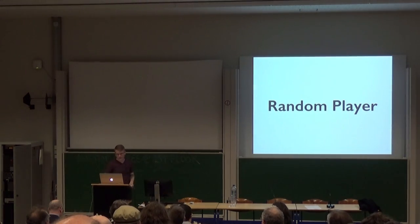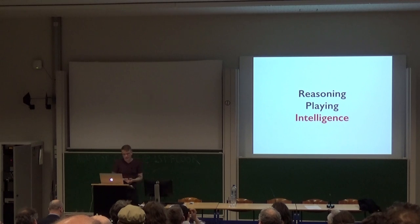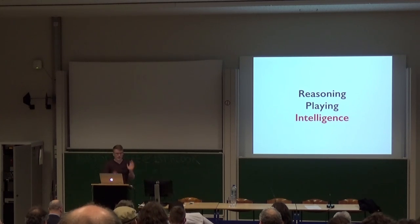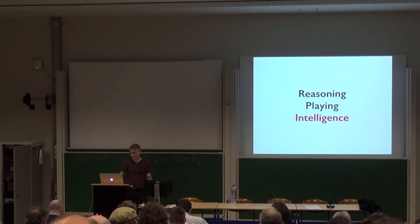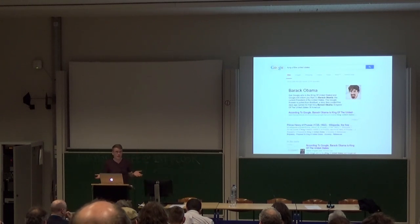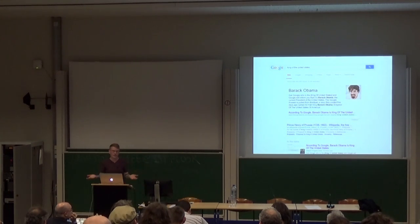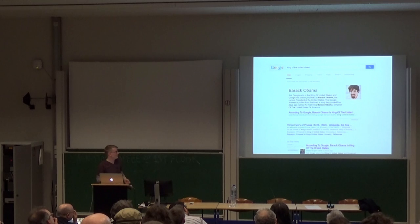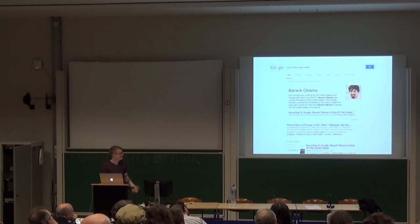A random player is kind of dumb — how can we make it smarter? The obvious answer since 2017 is just use machine learning, put a neural network on it, what could possibly go wrong? We're not going to use neural networks. We're going to go back to something a little more conventional: we're going to search the game tree.